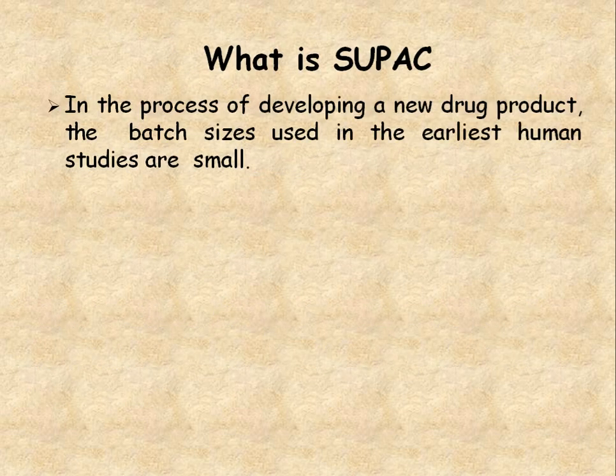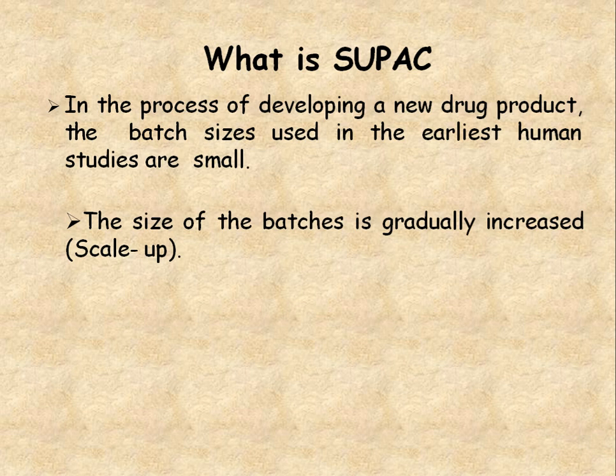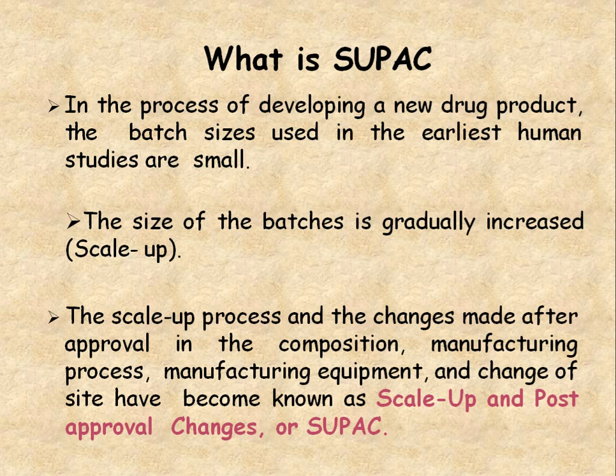Now, in the process of developing a new drug product, the batch size used in earliest human studies is small. During the actual approval process the batch size is small, then the size of the batch is gradually increased, and this increased batch size is known as scale-up. The scale-up process and the changes made after approval in composition, manufacturing process, manufacturing equipment, and change of site have become known as Scale-Up and Post-Approval Changes.